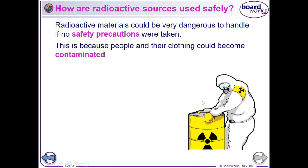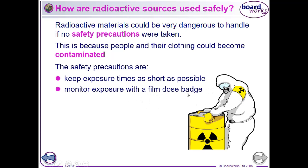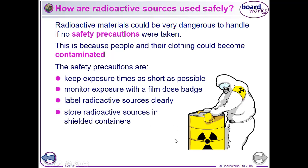Contamination refers to particles of the source getting onto clothes or inside our bodies. Irradiation means receiving the radiation itself. We ensure that we keep our exposure time as short as possible, and we use photographic film badges to measure the dose of radiation received. Sources are clearly labelled.